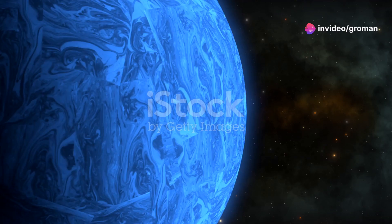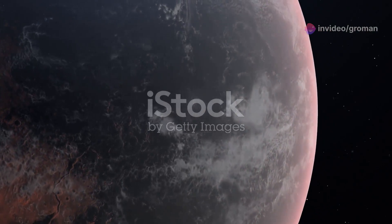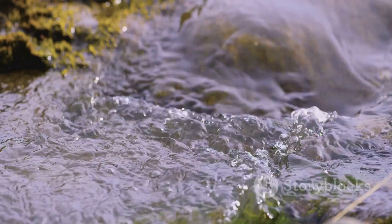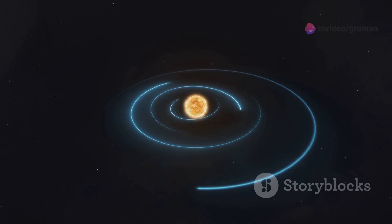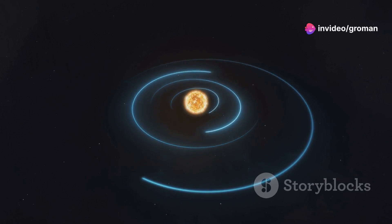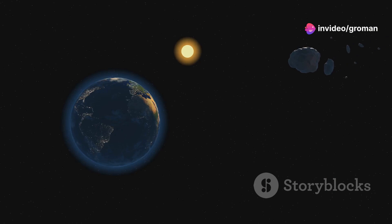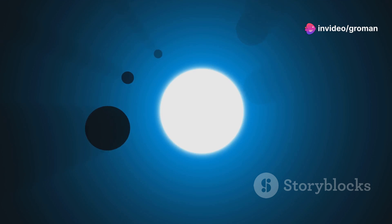A stable climate is key for life. Extreme temperature swings can be catastrophic. Life thrives within a narrow temperature range where water can exist in liquid form. The Goldilocks zone is where temperatures are just right for liquid water. Earth sits comfortably within our sun's habitable zone. A planet's climate is influenced by its distance from its star, orbit shape, rotation rate, and atmosphere.